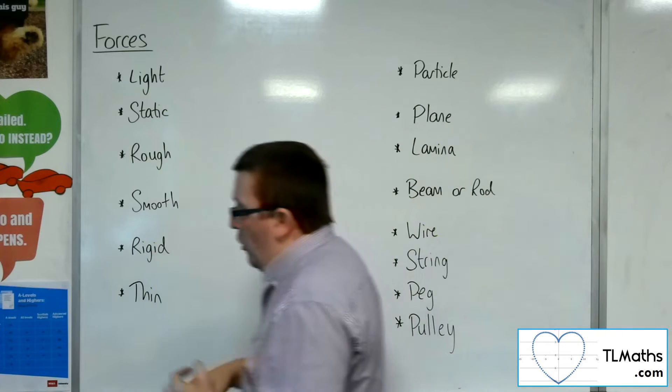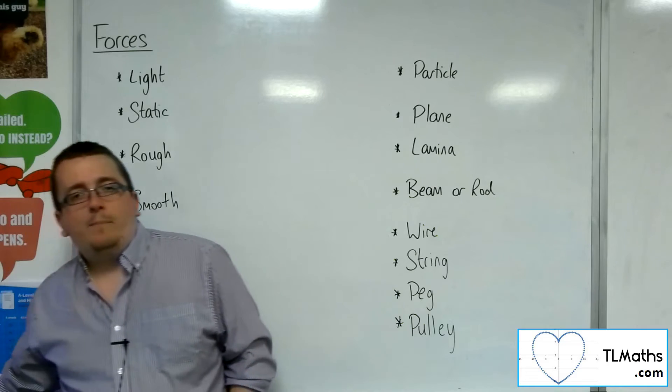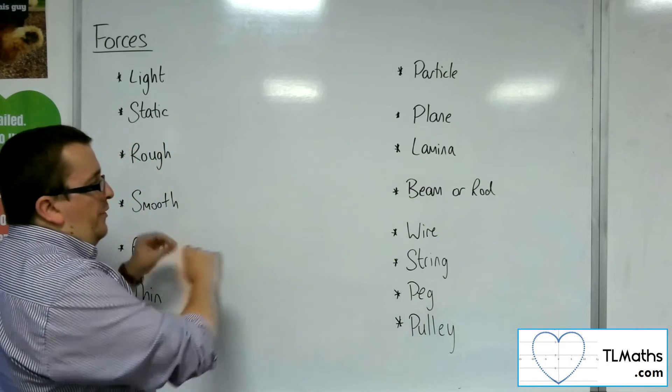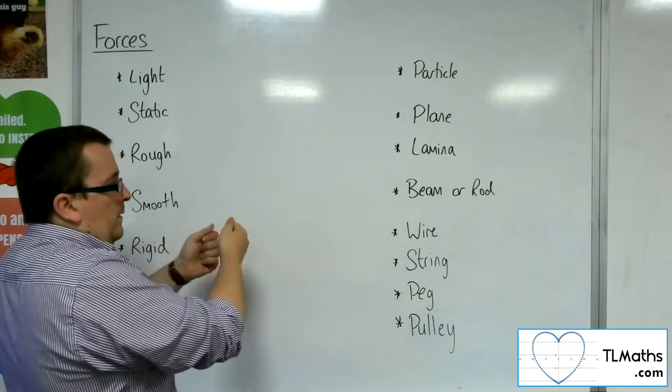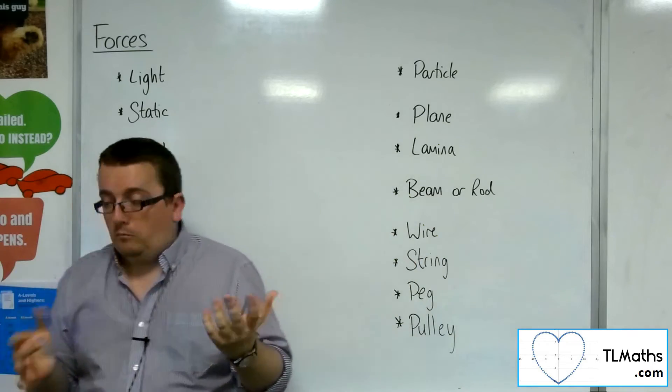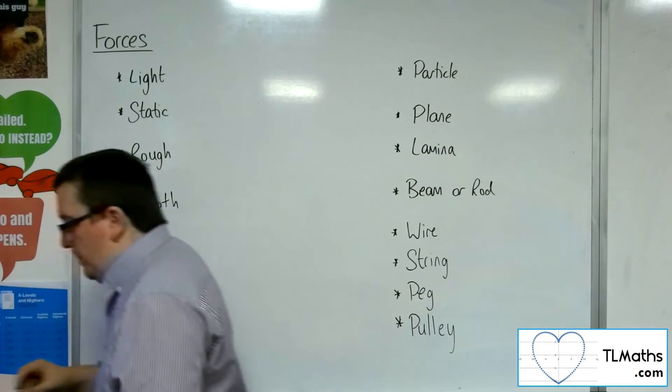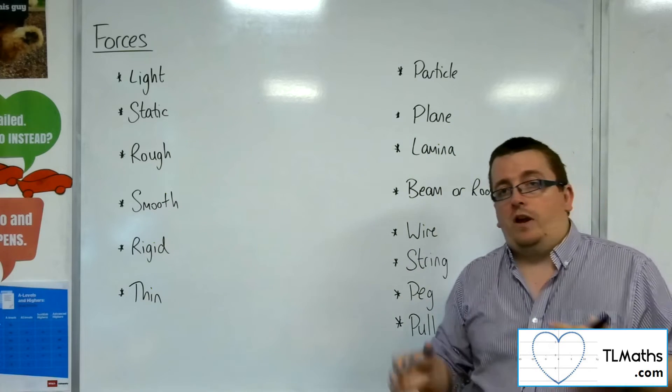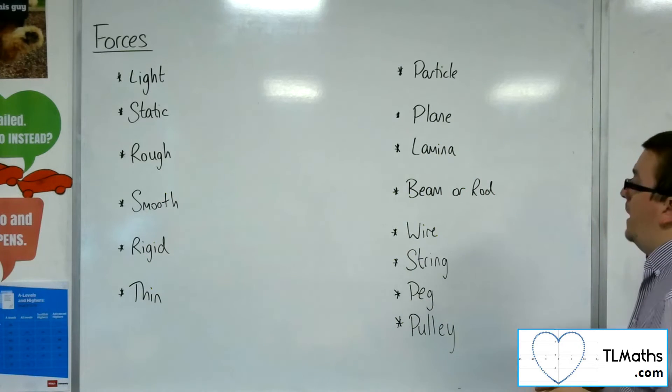Now, a beam or a rod, we're talking about a thin, straight bit of wood, for example, that people are stood on. We would be considering it as a rigid body, because we're not thinking of it being able to bend.